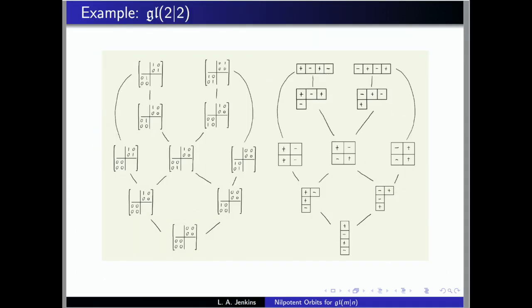For GL(2,2), you can write out everything nicely in what turns out to be a heart-shaped Hasse diagram. You can see the regular orbits at the top as expected, and you can work over on the Young diagram side—which is simpler—to write out your Hasse diagram and then translate it back to your nilpotent orbits. You can compare dimensions, observe pairs showing up, and see two minimal orbits in this example. You can get a lot of information by going back and forth between the two descriptions.